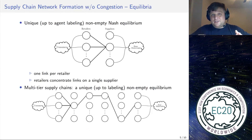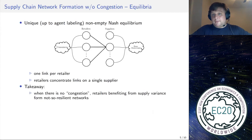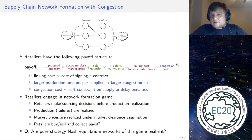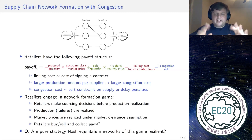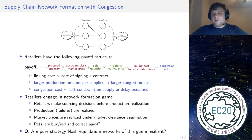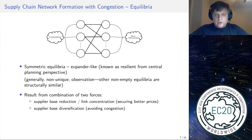Now let's do something about this result. We extend the previous model by adding one more cost: in addition to the linking cost, we extend the retailer payoff with a congestion cost. The congestion cost is essentially a quadratic function of the amount of product produced by a given supplier — when many retailers source lots of product from a given supplier, they experience high congestion penalties. The rest of the model is the same, and we still ask: are there pure strategy Nash equilibrium networks, and are they resilient?